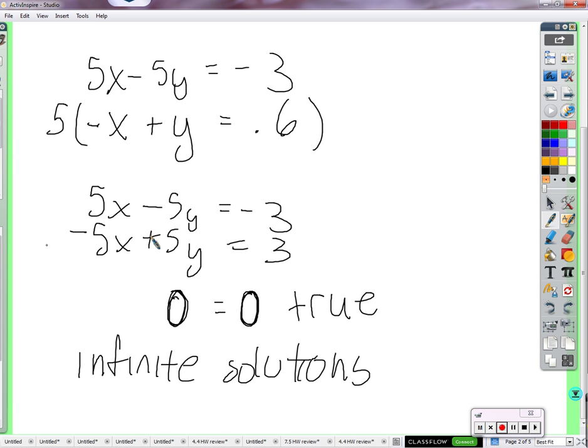So any value for x and y that solves this equation will always solve this equation. If you find a solution for this equation, it's going to be a solution for that equation. So there's not one solution. There's not like 6, 8, or 5, 3, or some one answer, one solution. There's infinitely many.